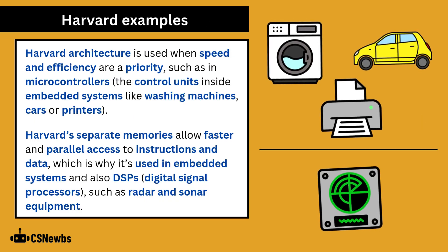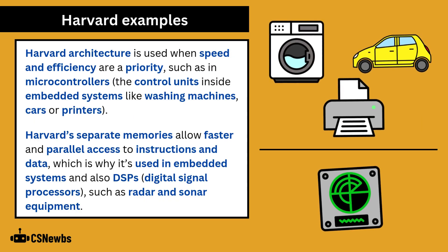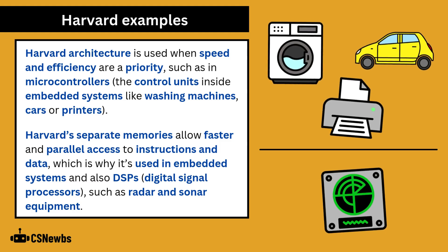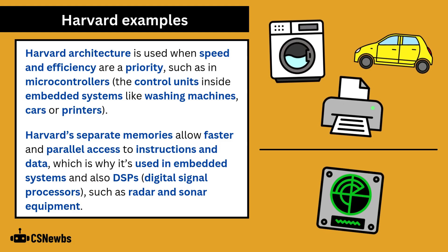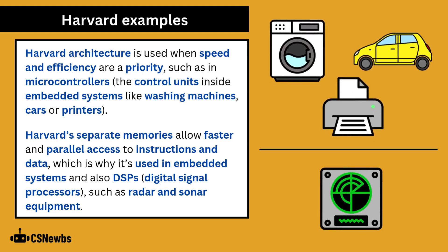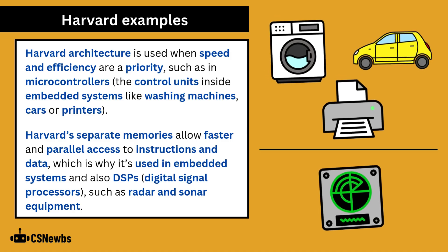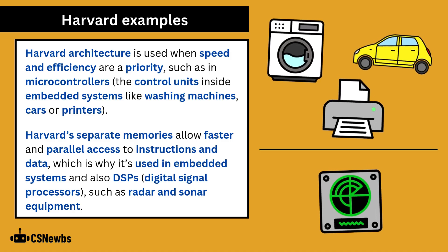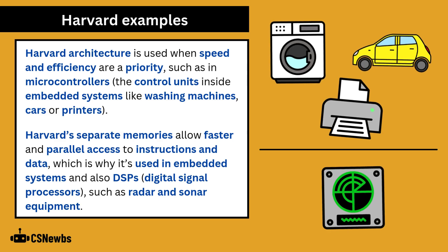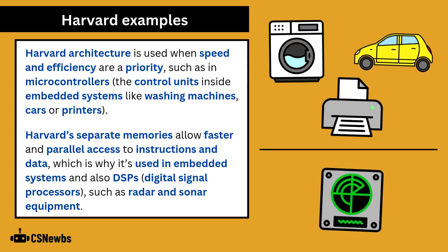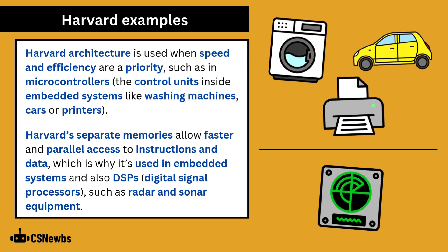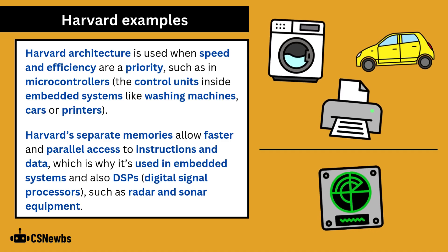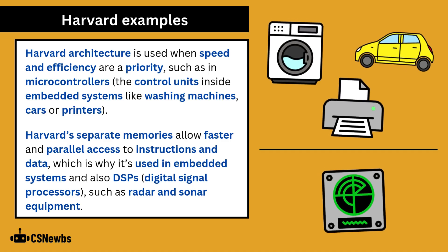Harvard architecture is used when speed and efficiency are a priority, such as in microcontrollers, which have the control units inside embedded systems like washing machines, cars, or printers. Harvard's separate memories allow faster and parallel access to instructions and data, which is why it's used in embedded systems and also DSP systems, such as radar and sonar equipment.